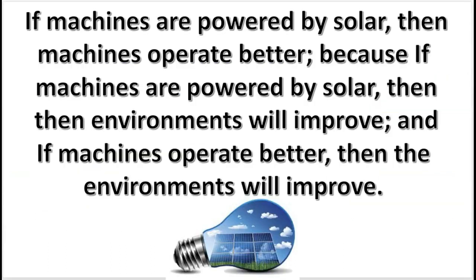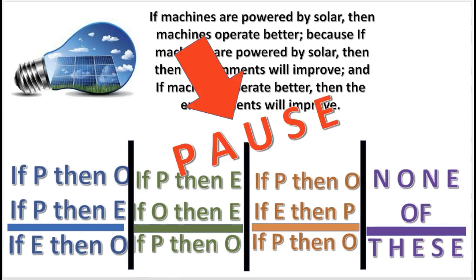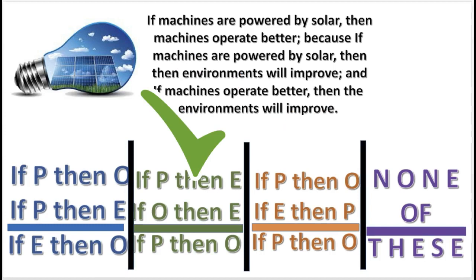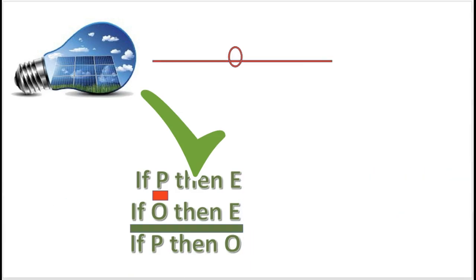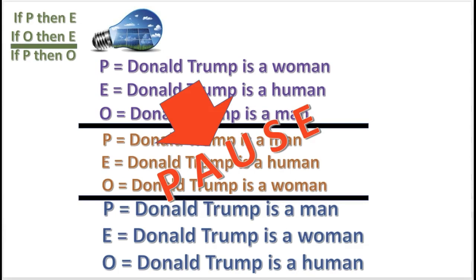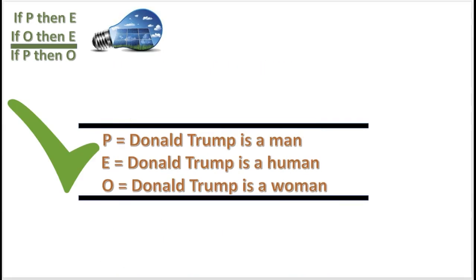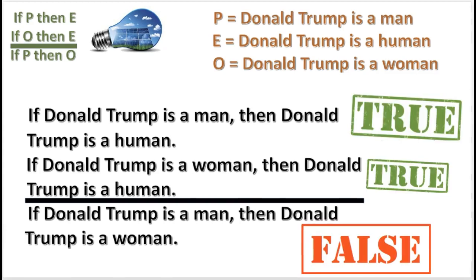Here's another practice problem. What is the form of this argument? Notice that P, E, and O stand for whole statements — and if you got that right, good job, because that was a difficult one. Now, what set of substitutions makes this form invalid? This set of substitutions makes the premise true and the conclusion false.